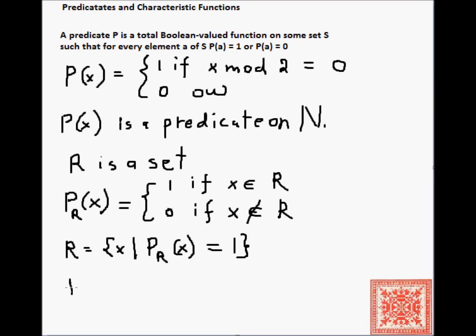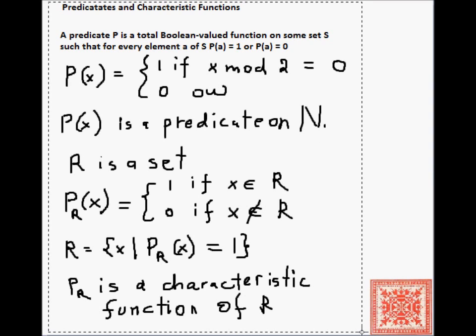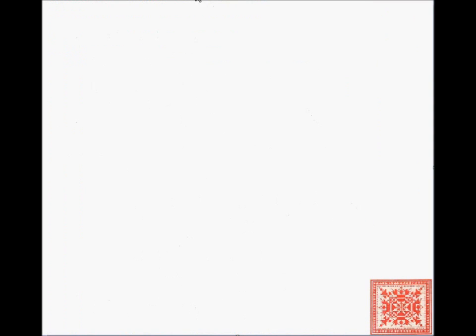Then R can be described as x such that p sub R of x is 1. And p sub R is called a characteristic function of R, because there might be multiple characteristic functions.